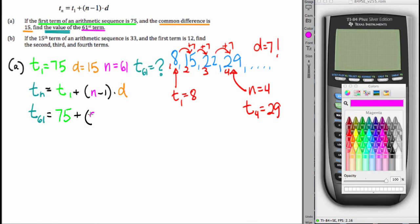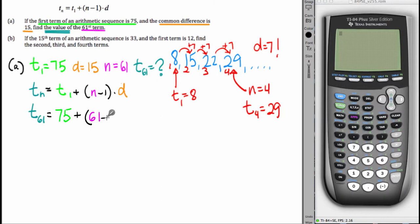Since we're looking for the 61st term, n is 61. And the common difference is 15. From here on out, it's all algebra.